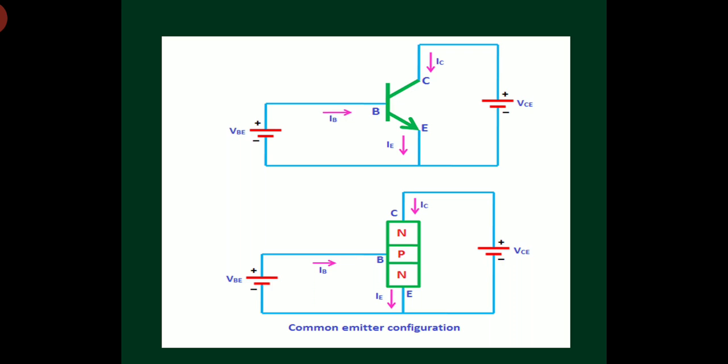Irrespective of the type of configuration and irrespective of the type of transistor — NPN or PNP — input junction is always forward biased and output junction is always reverse biased. In common emitter configuration, the input junction J-E is between base and emitter, and the output junction J-C is formed between collector and base.